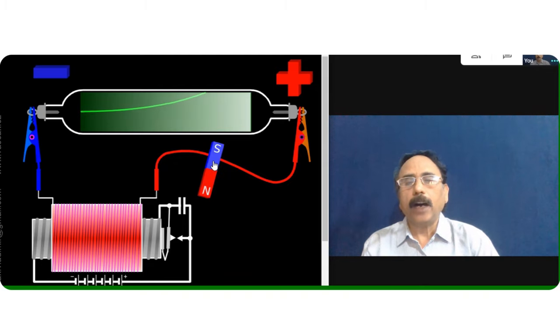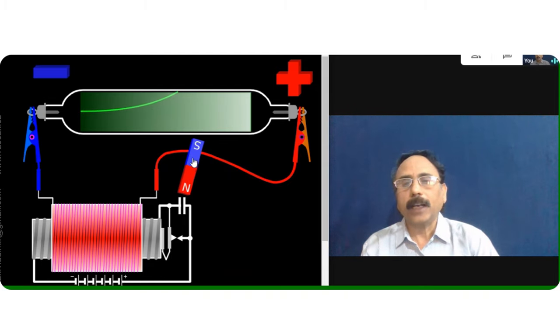Now if I rotate this magnet and keep the south pole towards the cathode ray tube, then the bending is in the upward direction.